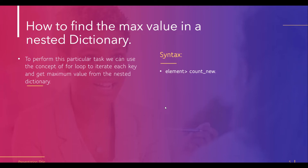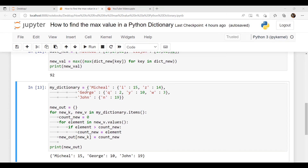Our next topic is how to find the maximum value in a nested dictionary. A nested dictionary means a dictionary within a dictionary. To perform this task we use a for loop to iterate each key and get the maximum value from the nested dictionary. We also use the max function, which is always used in dictionaries to get the maximum value. In the example, the inner dictionary variables are stored as strings. After applying the max function, we get a set with two values: one is the key and the other is the value.